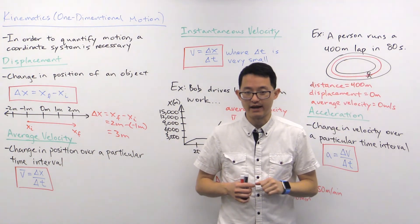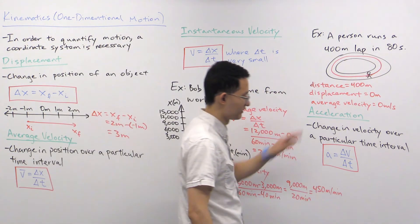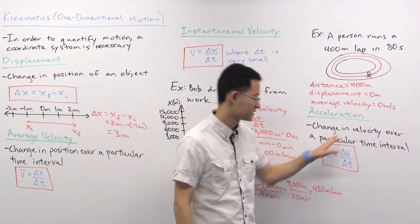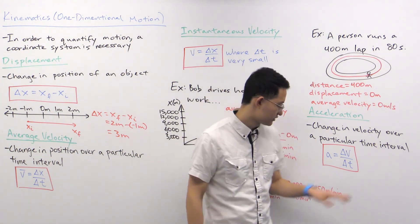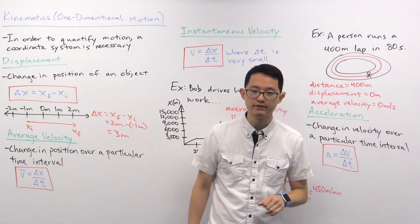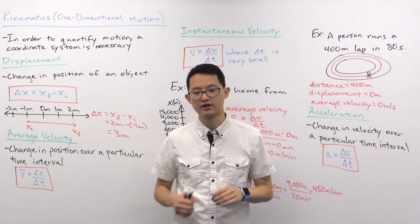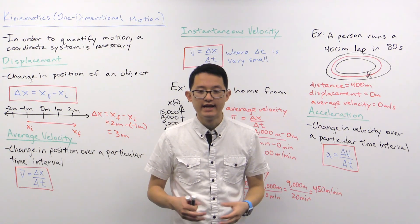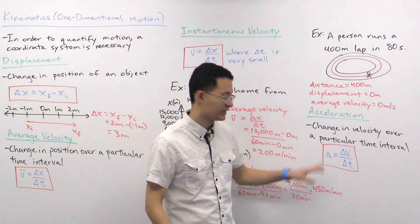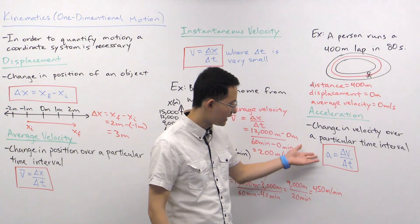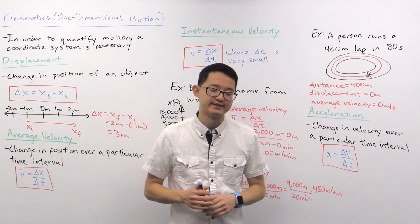Finally, acceleration is the change in velocity over a particular time interval, given by the equation: acceleration equals change in velocity over change in time. You can technically discuss average acceleration and instantaneous acceleration just as we did for velocity. The MCAT doesn't tend to test the difference between those as much as for velocity, but if it ever does appear on the exam, the same approach applies.